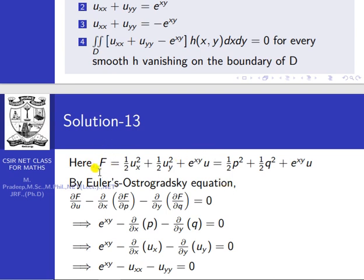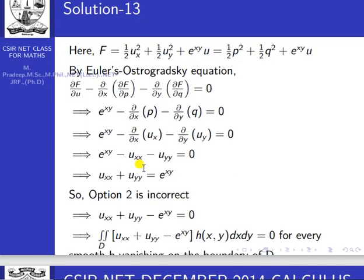Here capital F is (1/2 ux² + 1/2 uy² + e^(xy) · u). That is our capital F. Here ux means the partial derivative of u with respect to x, which I will denote as p, and uy as q. So F = 1/2 p² + 1/2 q² + e^(xy) · u.